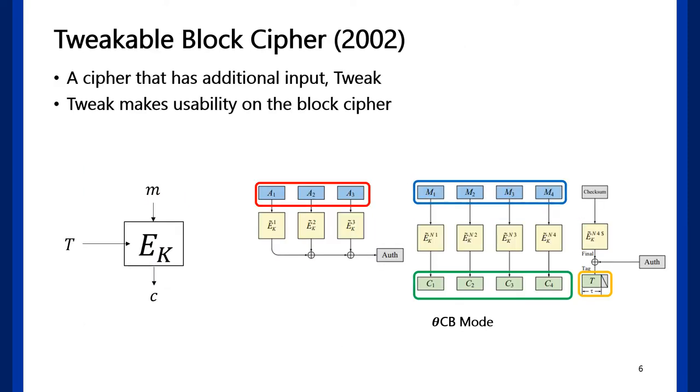Tweakable block cipher is the pioneer. Tweakable block cipher has additional input compared to block cipher, the tweak. Tweak is a public input that makes usability on the block cipher. Theta CB is the representative tweakable block cipher based AEAD. It makes some revision on OCB.